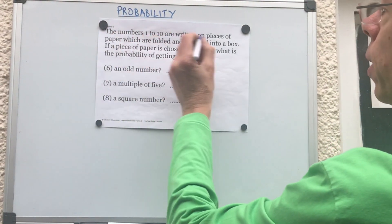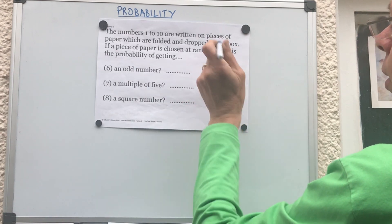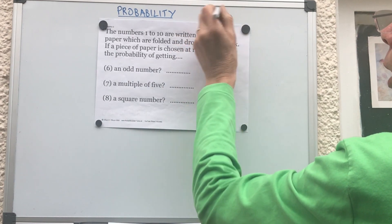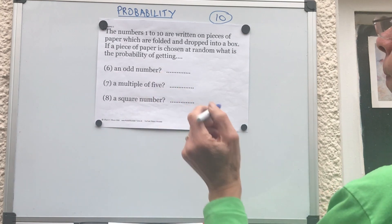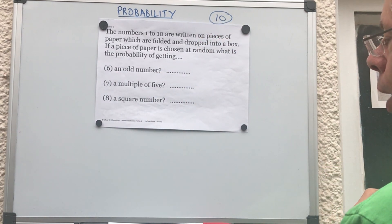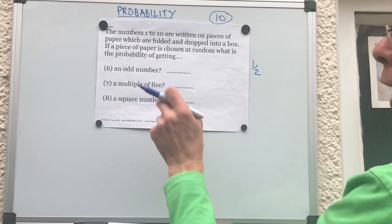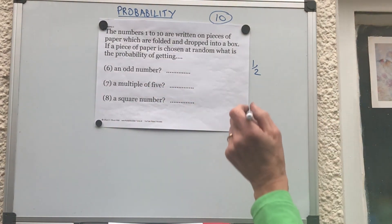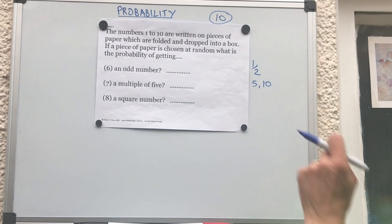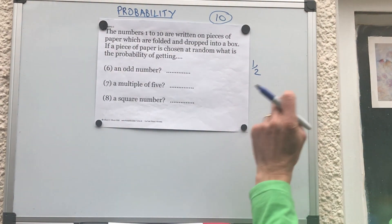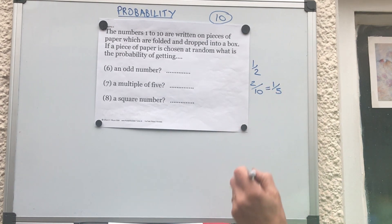The numbers one to ten are written on pieces of paper, folded and dropped into a box. If a piece of paper is chosen at random, there are ten numbers. The probability of getting an odd number: half of them are odd, so it's five out of ten, which simplifies to a half. A multiple of five means a number in the five times table — that's five and ten, so two out of ten, which is one fifth.